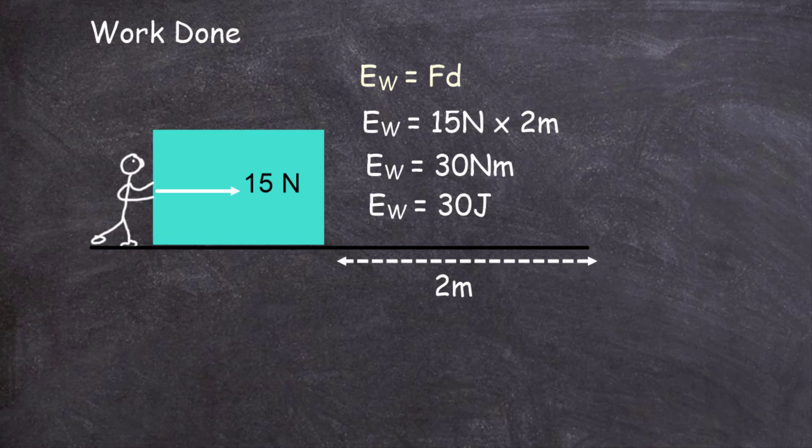So the force which moved this block through a distance of 2 metres has done 30 joules of work on the block. That energy has shown itself in the form of movement, because the block has moved. Work done is energy transferred — in this case, the 50 newton force which moved the block through 2 metres has done 30 joules of work on the block.